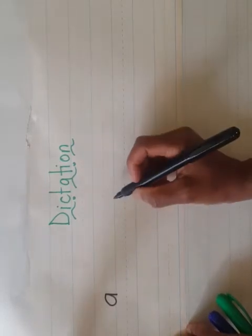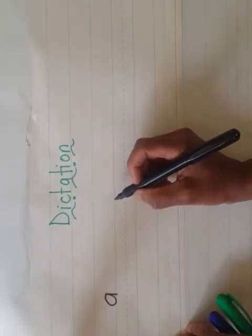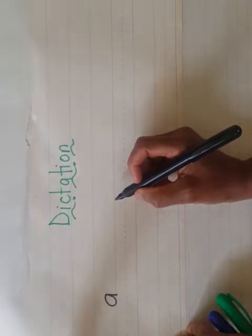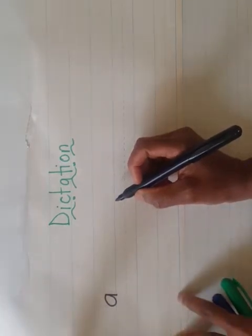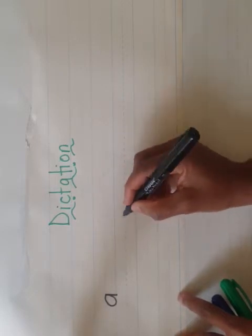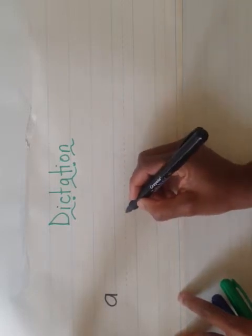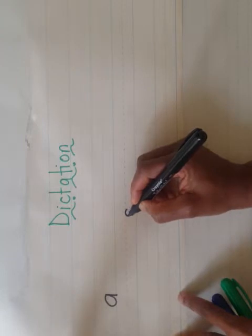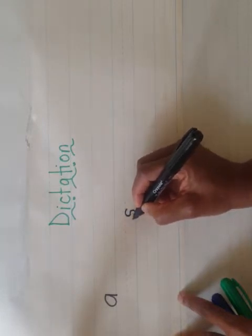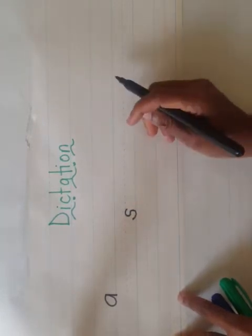Write the letter that makes the 's' sound. What letter says that? Yes, it's the letter S. This is how we write an S: you start from the top, go around, go in and out — that's it, that's S.